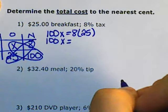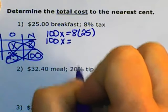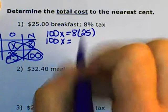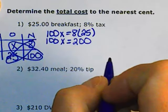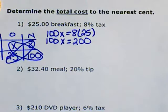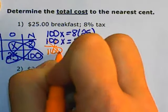100x equals 200. Divide both sides by the coefficient of 100.